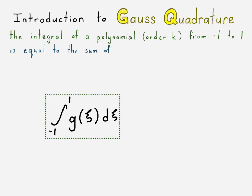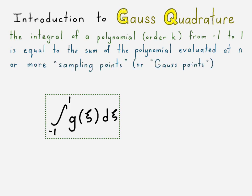And say that it is equal to the sum of the polynomial evaluated at N or more sampling points. And these are also called Gauss points or integration points, Gauss integration points. It all means the same thing.